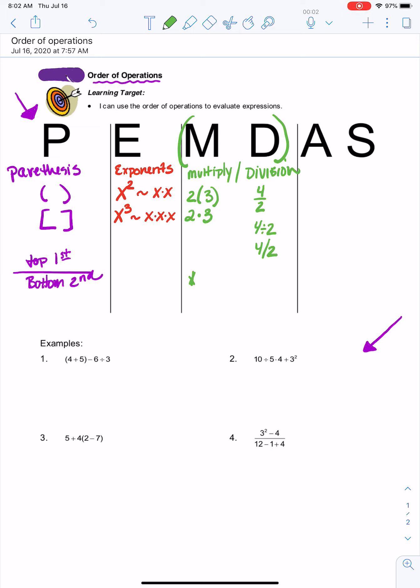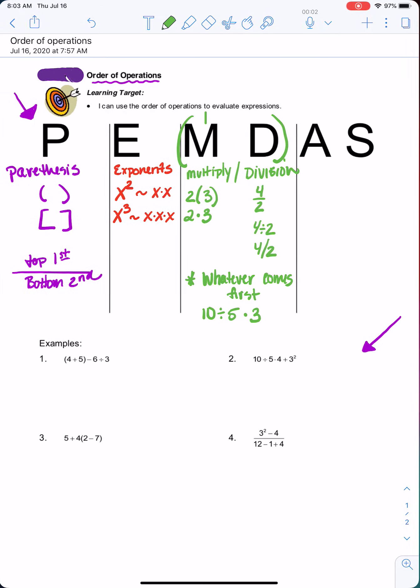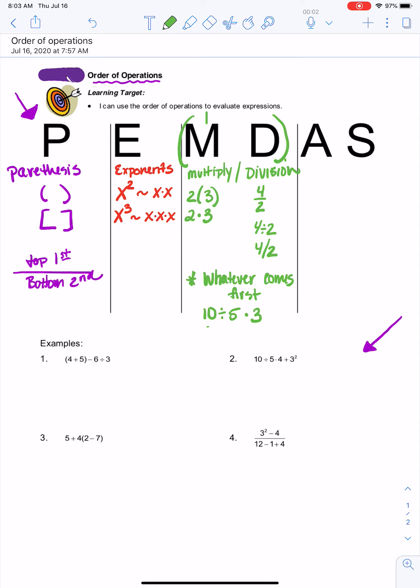Now the special rule I was talking about and why these are together is because whenever you have these two things together, you're going to do whatever comes first. So if I have an example like this, where I have 10 divided by 5 times 3, I know multiplication comes first in PEMDAS, but since they're together in the same expression, since division actually comes first with those two operations, you're going to do 10 divided by 5 first. So just keep that in mind.